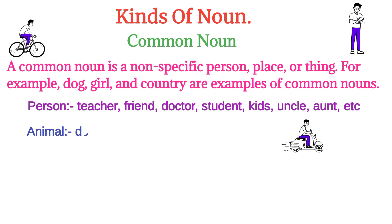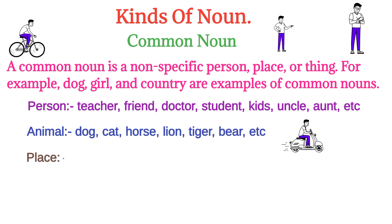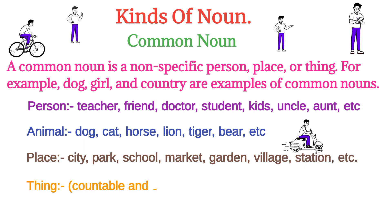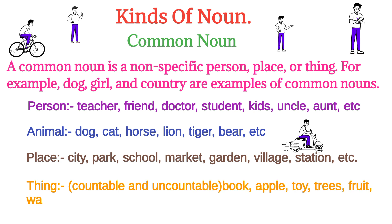Animal: dog, cat, horse, lion, tiger, bear, etc. Place: city, park, school, market, garden, village, station, etc. Thing (countable and uncountable): book, apple, toy, trees, fruit, water, rice, air, etc.